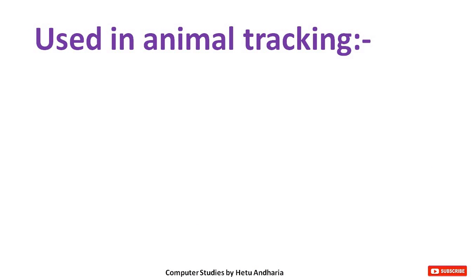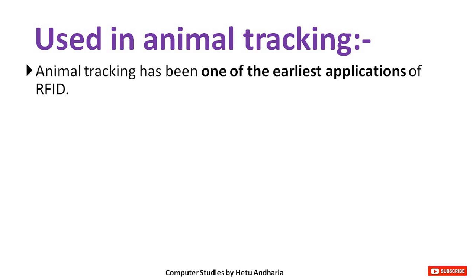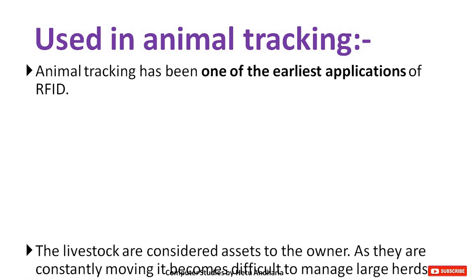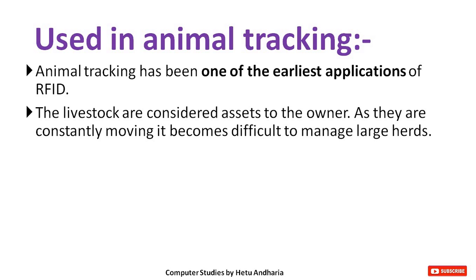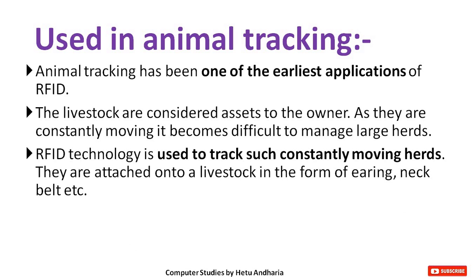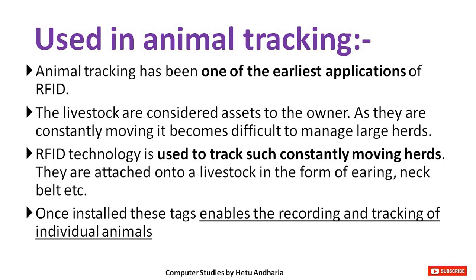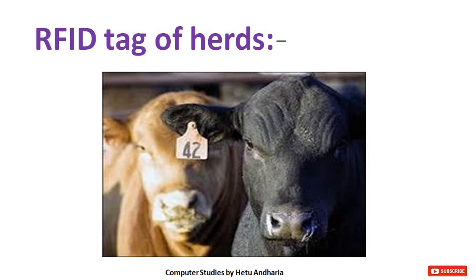Animal tracking has been one of the earliest applications of RFID. Livestock are considered assets to their owners, and as they are constantly moving, it becomes difficult to manage large herds. RFID technology is used to track such constantly moving herds. Tags are added to livestock in the form of earrings, neck belts, etc. Once installed, these tags enable the recording and tracking of individual animals — you can see an example of an RFID tag added on the ear of an animal.